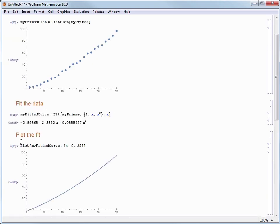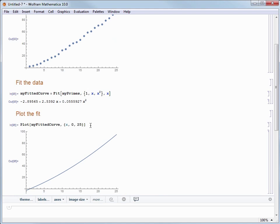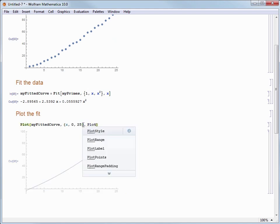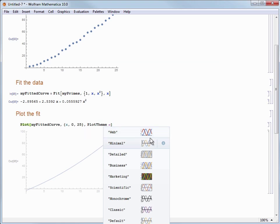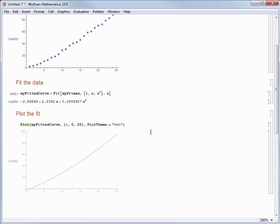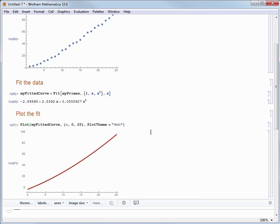Let's also add in an option so we can put in plot theme. And as we do that the command completion gives us a pop-up window with different styles to choose from. Let's actually select web to see what it looks like. And we get a plot that's red and a little bit thicker.